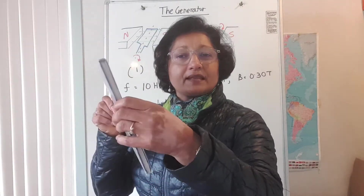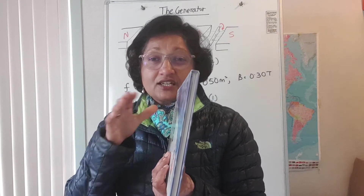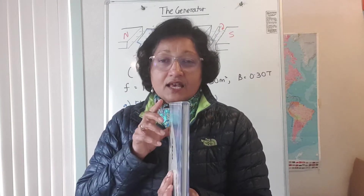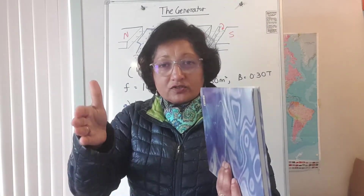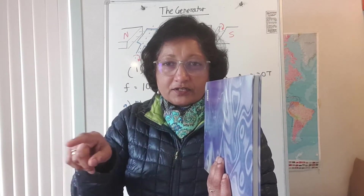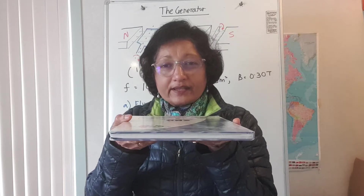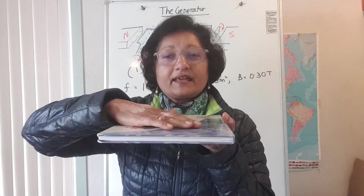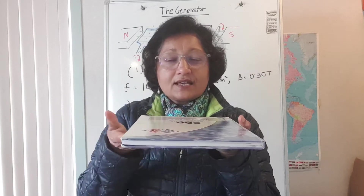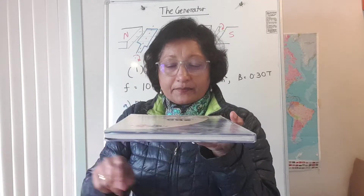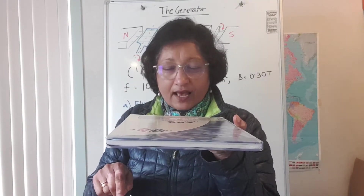What happens when it's spinning is that the area of the coil is actually changing in relation to the lines of flux. If the two poles of the magnet are vertical, the lines of flux are going to be horizontal lines. When the plane of the coil is horizontal, it is running parallel to the lines of flux.